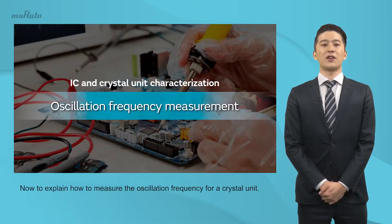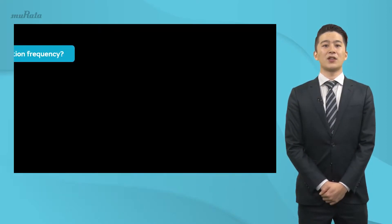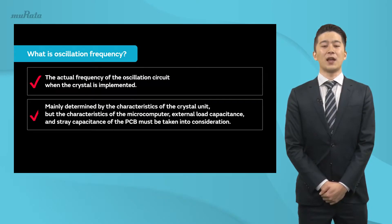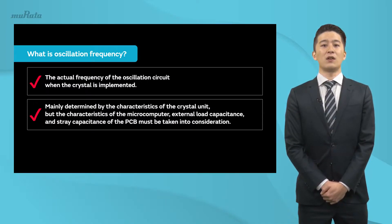This explains how to measure the oscillation frequency for a crystal unit. Oscillating frequency refers to the actual frequency of the oscillation circuit when the crystal is implemented. The oscillation frequency is mainly determined by the characteristics of the crystal unit, but the characteristics of the microcomputer, external load capacitance, and stray capacitance of the PCB must be taken into consideration to determine the actual oscillation frequency.